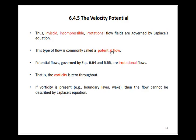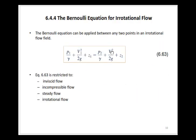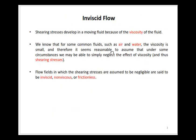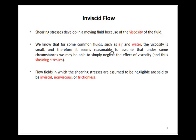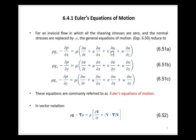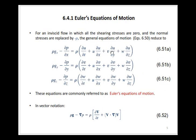We started from the equation of motion and simplified it by eliminating the shear stress term. We converted that equation into a simpler form called the Euler equation, in which sigma or normal stresses have been replaced by pressure p.